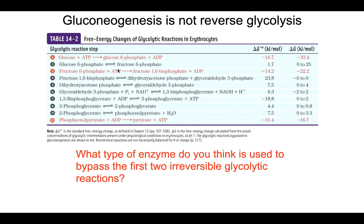So what that means is that for each of these three steps in glycolysis, there needs to be a workaround enzyme — an enzyme that bypasses those three reactions. All the other reactions in glycolysis, the seven other ones, are all reversible under physiological conditions. They all have delta Gs that are close to zero, so gluconeogenesis can use those enzymes. Gluconeogenesis just needs three ways to bypass glycolysis at step 10, step 3, and step 1.